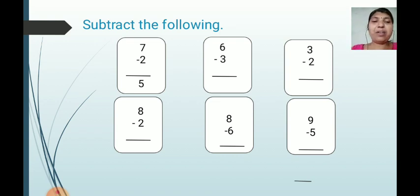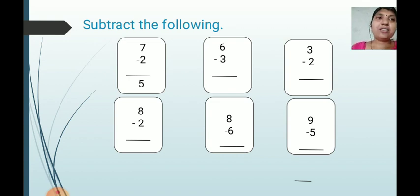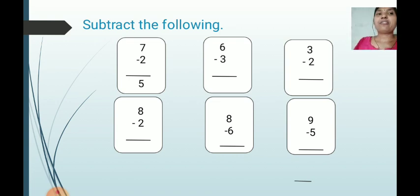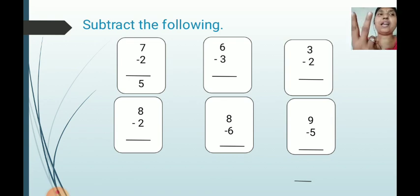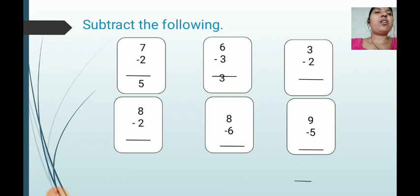Let us see one more example: 6 minus 3. Here 6 is the upper number and 3 is the lower number. Start counting from the lower number up to the upper number. Count on your fingers after 3: 4, 5, and 6. How many fingers are raised? 1, 2, and 3. So the answer is 3. Write down 3 in the box. 6 minus 3 equals 3.